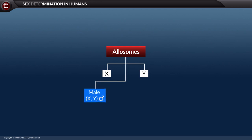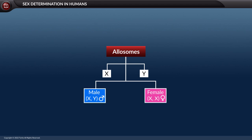In males, the allosome pair includes one X and one Y chromosome, and in females the pair includes two X chromosomes. Let us see how these chromosomes are useful in determining the sex of an organism.